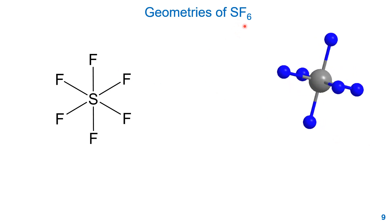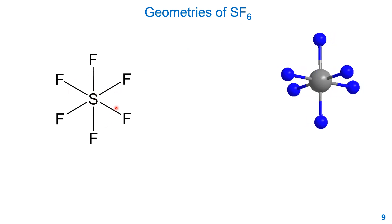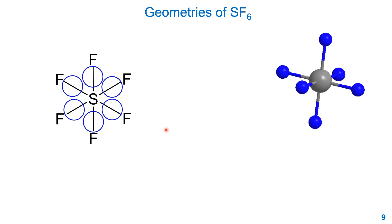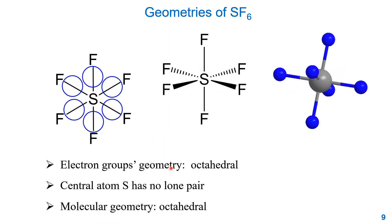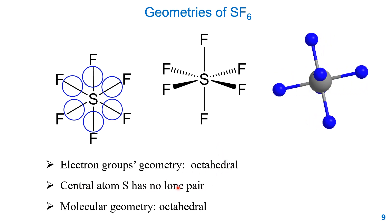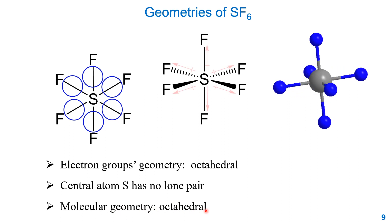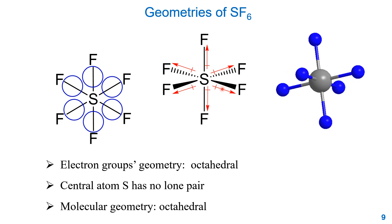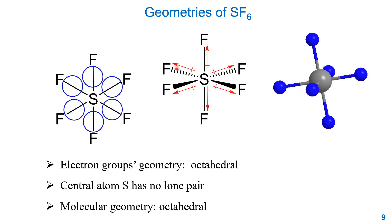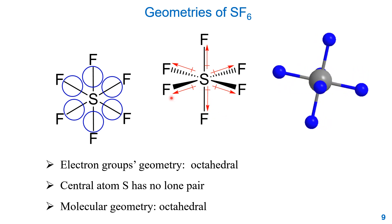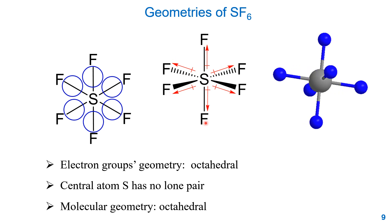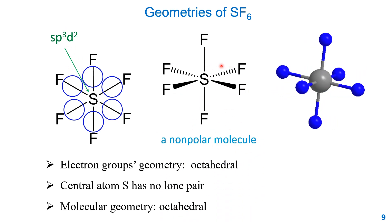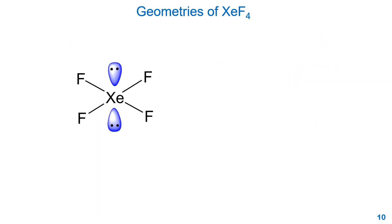Sulfur hexafluoride SF₆ has a central atom sulfur with six single bonds, giving six electron groups. The electron group geometry is octahedral. Since there is no lone pair on sulfur, the molecular geometry is also octahedral. The central atom is sp3d2 hybrid. The S–F bonds are polar, but in the octahedral arrangement all dipole moments cancel each other, making SF₆ a nonpolar molecule.